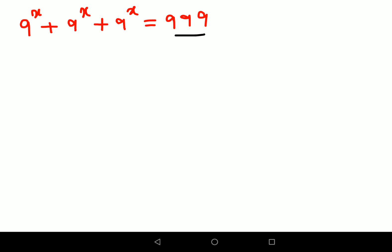In your LHS we'll take 9 raise to x common, so you're left with 1 plus 1 plus 1, and this equals 999. This then comes out to be 9 raise to x times 3 equals 999.